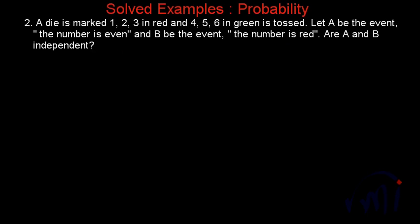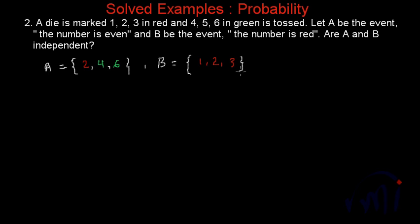The second problem says: a die is marked one, two, three in red and four, five, six in green and is tossed. Let A be the event the number is even, and B be the event the number is red. Are A and B independent? Event A means the number is even, so the favorable outcomes for event A are two (marked red), four and six (marked green). Event B is the number is red, so the numbers marked red are one, two, and three.